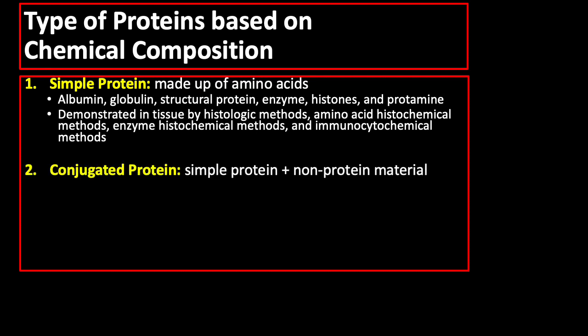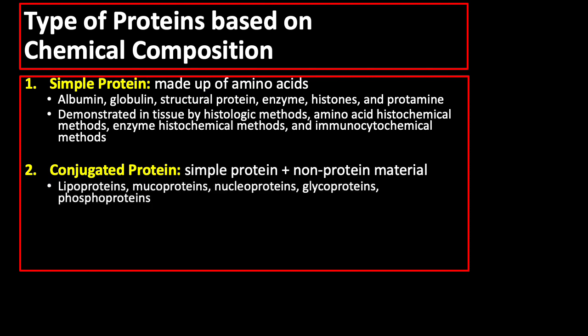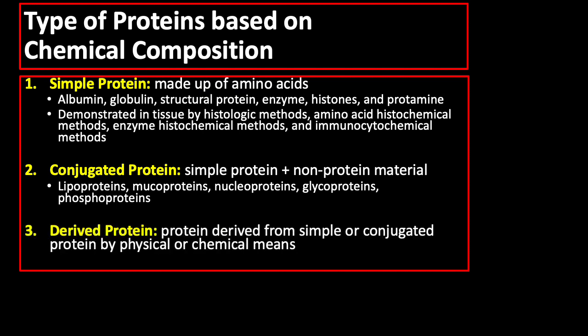Next is conjugated protein, which is simple protein combined with some non-protein material. Examples of conjugated proteins are lipoproteins, glycoproteins, nucleoproteins, and phosphoproteins. Lastly, derived protein is a protein derived from simple or conjugated protein by physical or chemical means, such as denatured proteins and peptides.